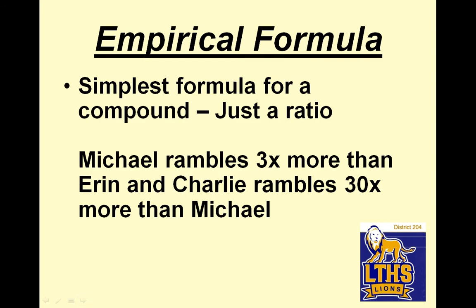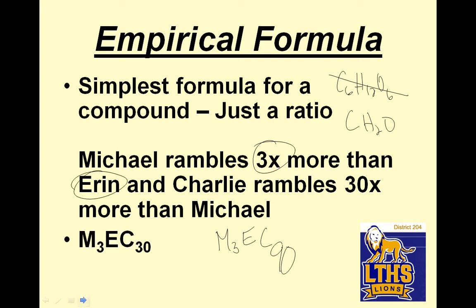An empirical formula is the simplest form of the compound. It's just a ratio. So for example, C6H12O6 is glucose. I could reduce that. That's not an empirical formula. That would be CH2O. Michael rambles three times more than Aaron, and Charlie rambles 30 times more than Michael. So it would be M3A. Charlie rambles 30 times more than Michael, so Charlie would be 90. So that would be the reduced ratio. Before Aaron hardly rambles at all.